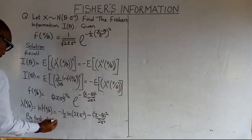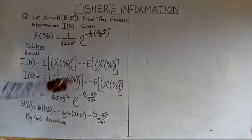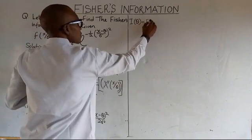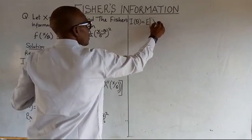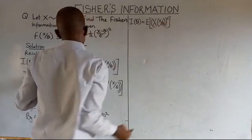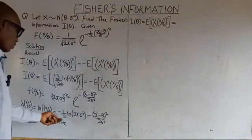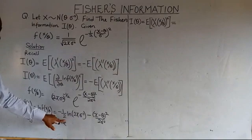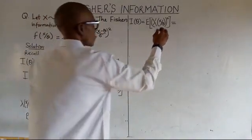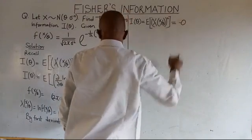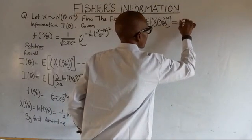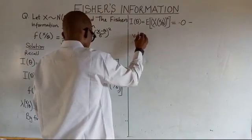By first principle, for the first derivative we need to differentiate the log-likelihood with respect to theta. Looking at the term (x minus theta) squared over two sigma squared, this involves a quotient, so we use what is called the quotient rule to differentiate it.